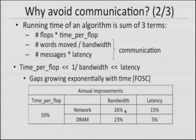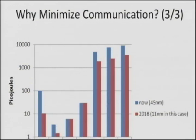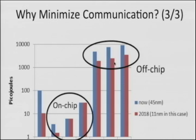Our first goal is to avoid communication to save time, but that's not the only reason. Here is a plot of the energy it takes to perform basic operations on a log scale. A double precision floating point operation in today's technology takes 100 picojoules; the prediction is in 2018 it'll take 10 times less. The next bars show joules to move data on chip, and these bars show energy to move data off chip. It's one to one and a half orders of magnitude more expensive to move data off chip today, and it'll be two and a half orders of magnitude more expensive in five years. Whether you're worried about your laptop battery or the million dollars per megawatt per year to run your data center, you want to avoid communication to save energy.